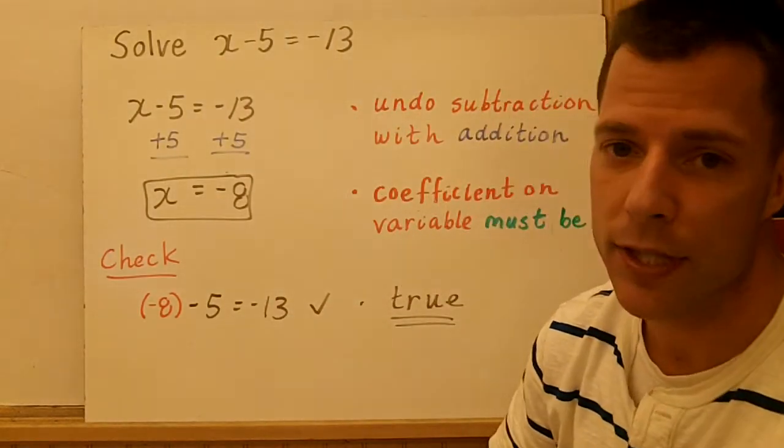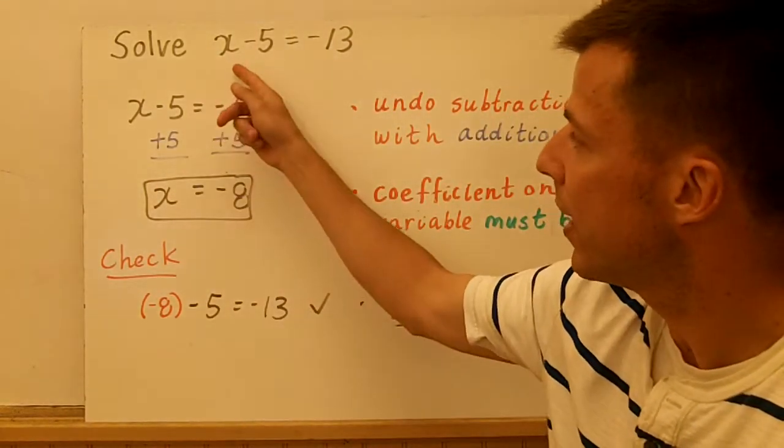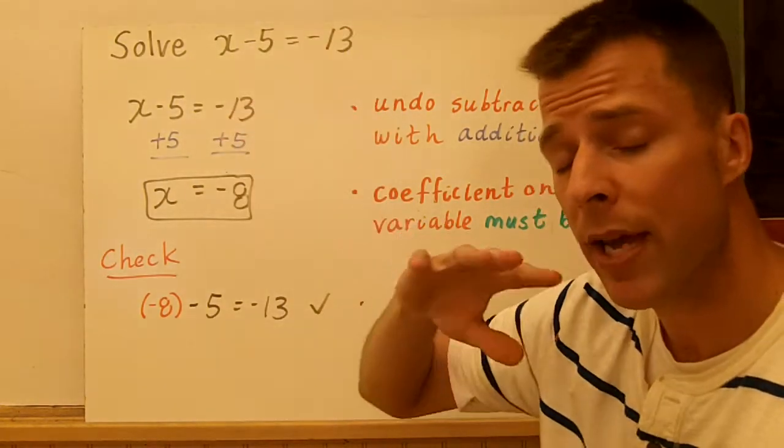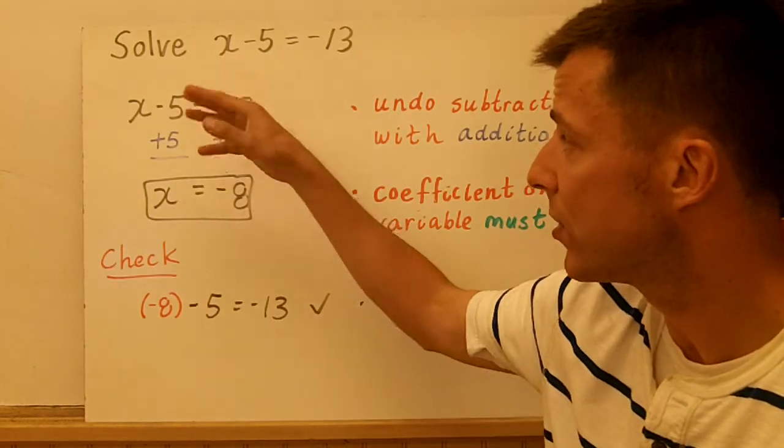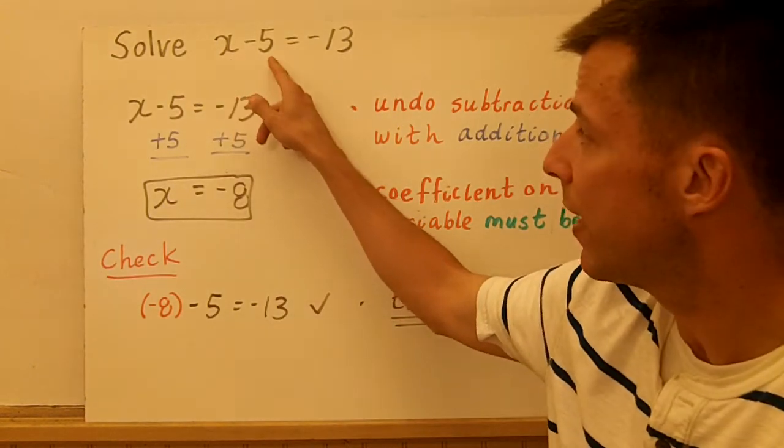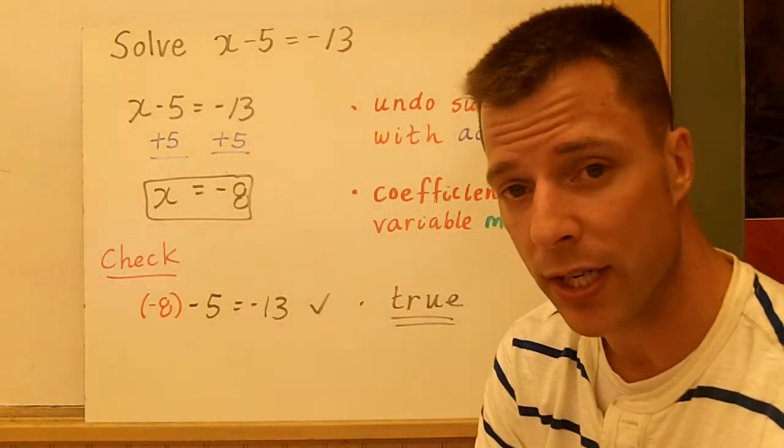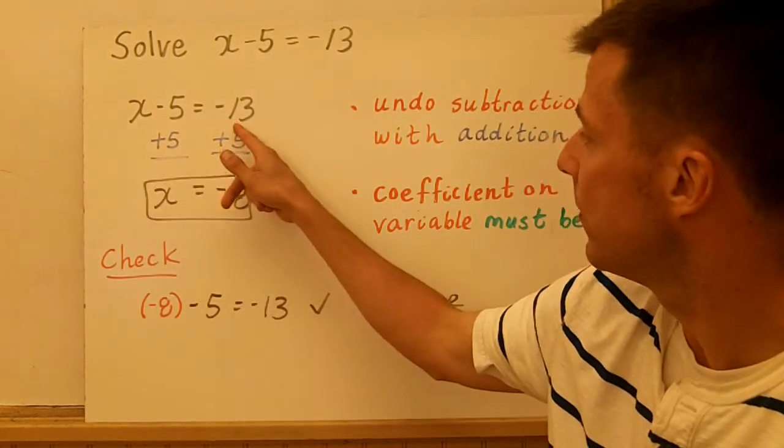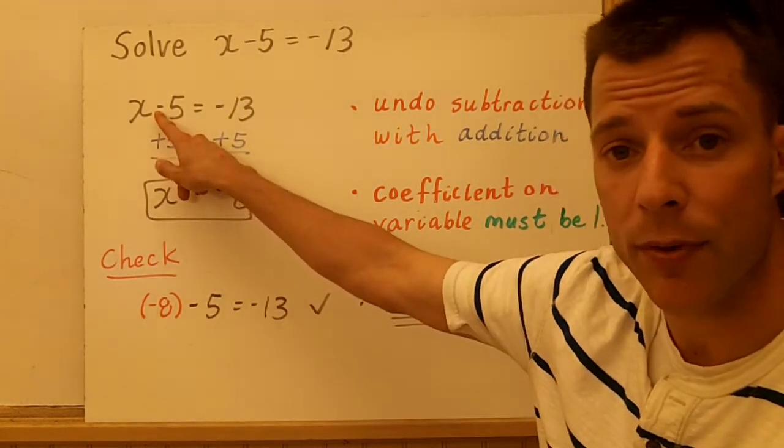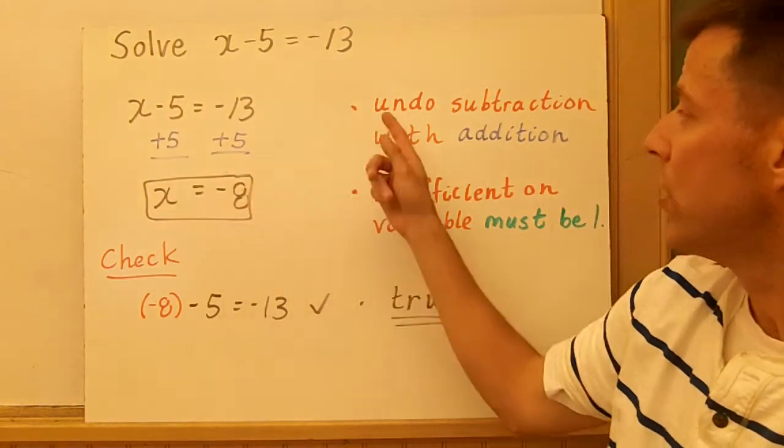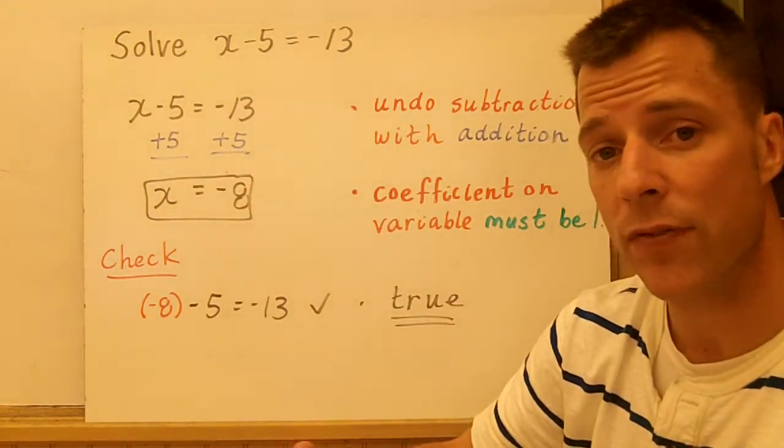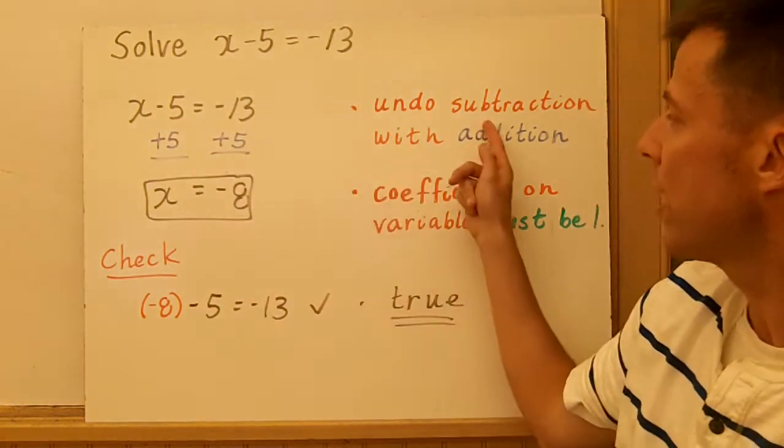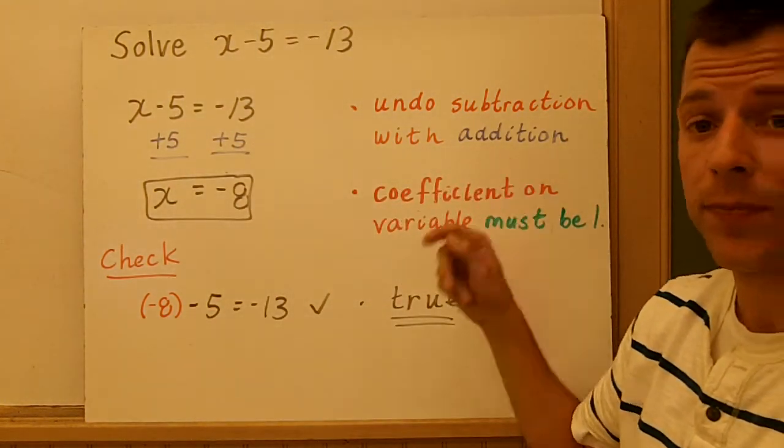This first one, solving x minus 5 equals negative 13. You might be able to use mental math to get that answer. What number, when you subtract 5, gives you negative 13? So what I did first is rewrite the equation, and I noticed that the only operation I see is subtraction. So the idea here is, to solve the equation, we have to undo the operation we see. To undo subtraction, we're going to use addition.